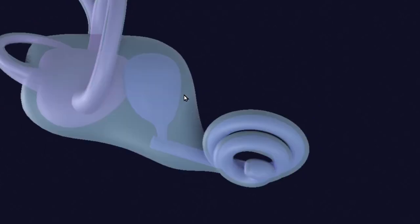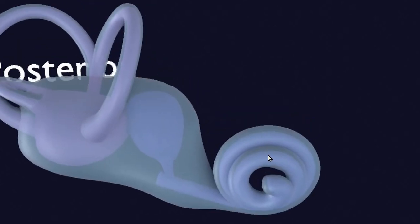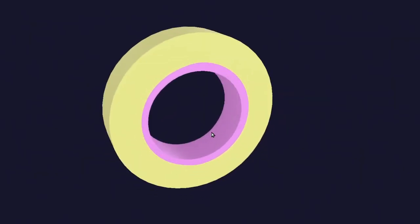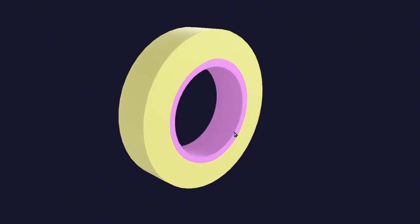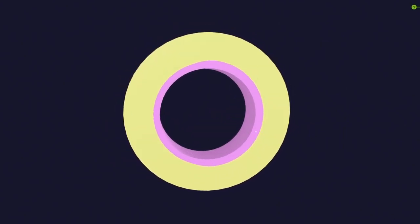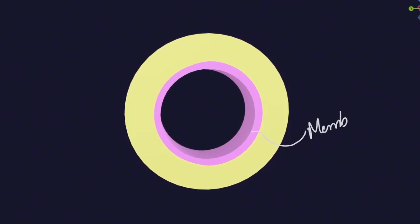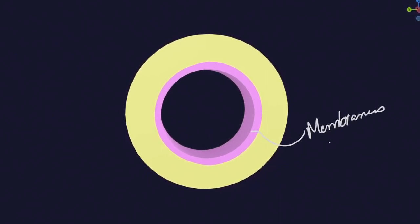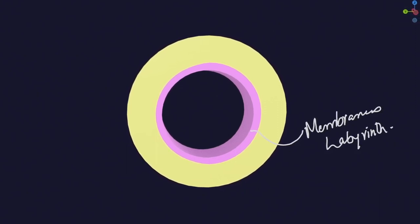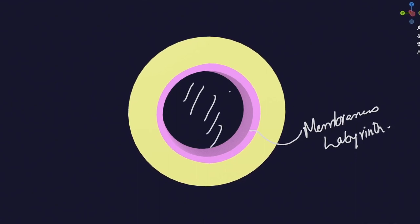Please also remember that around this whole apparatus the mesenchyme surrounds it, and this mesenchyme will form the otic capsule — we have already discussed these things. So here you can see the section of the cochlea, and centrally you can see the membranous labyrinth, which is filled with endolymph.